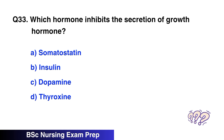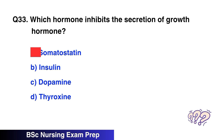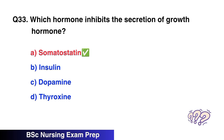Question 33. Which hormone inhibits the secretion of growth hormone? The correct option is A, somatostatin.